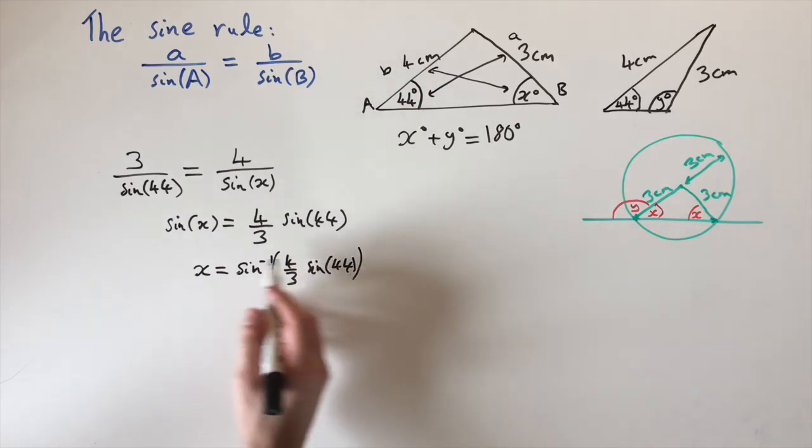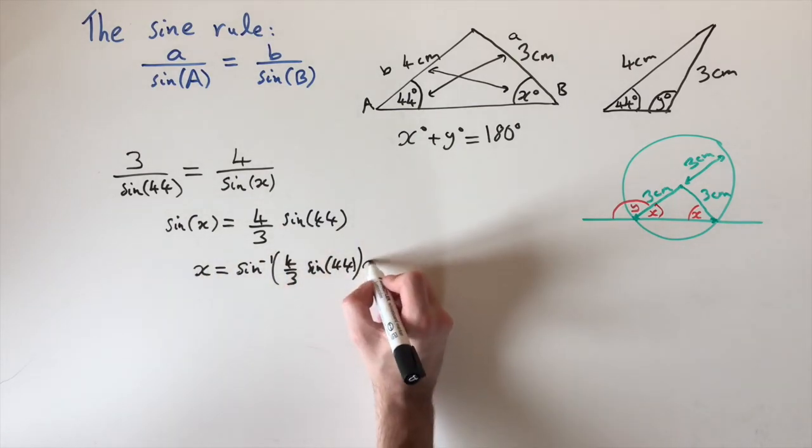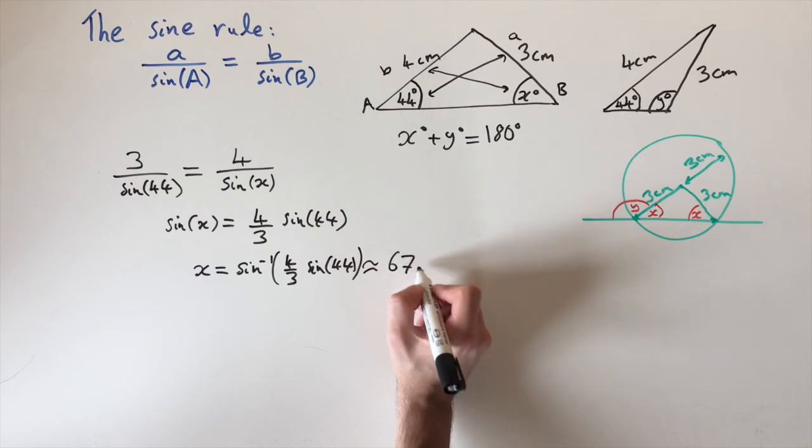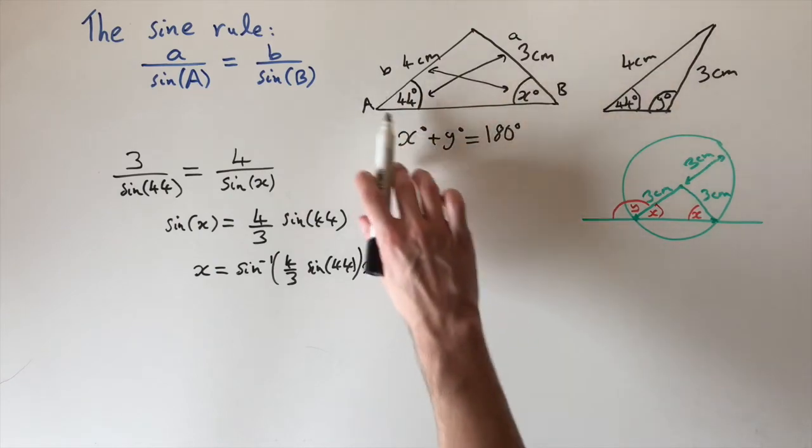We can put this into a calculator, and the calculator will give us the acute angle x. This comes out as approximately 67.9 degrees, which is good because it's less than 90 degrees, so it agrees with our diagram that it's acute.